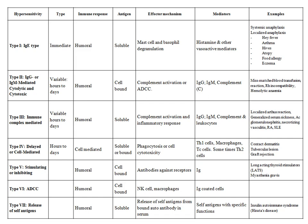Examples of Type 1 hypersensitivity include systemic anaphylaxis, and localized forms such as hay fever, asthma, hives, atopy, food allergy, and eczema. Type 2 is IgG or IgM mediated, involving cytolysis or cytotoxicity, with a variable duration from hours to days.